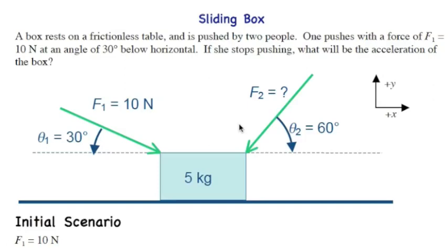A box rests on a frictionless table and is pushed by two people. One pushes with a force of F1 equals 10 Newtons at an angle of 30 degrees below the horizontal. If she stops pushing, what will be the acceleration of the box?